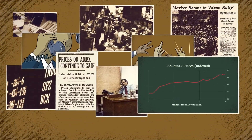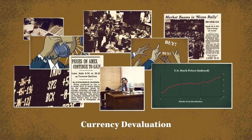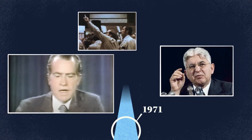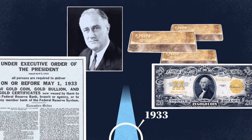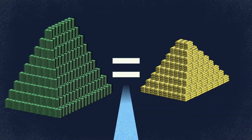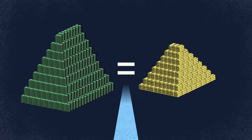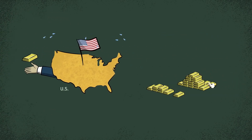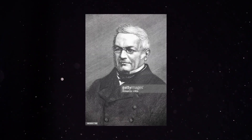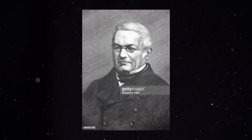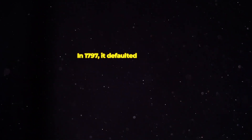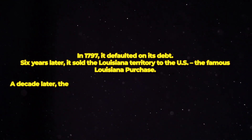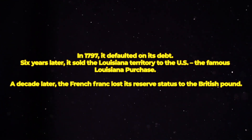It's essentially what the US has been going through over the past year. And that's worrying because of what history shows comes later. Eventually, over a period of years or decades, the government and people of the reserve currency country can no longer afford their debts. Often what happens is the government defaults on its debt and starts selling off its assets. One famous example is France, which had the global reserve currency in the 1700s. In 1797, it defaulted on its debt. Six years later, it sold the Louisiana territory to the US — the famous Louisiana Purchase. A decade later, the French franc lost its reserve status to the British pound.